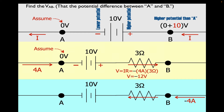That gives me negative 12 volts. To find the potential at B, I take the starting potential plus all the changes: zero plus 10 volts plus negative 12 volts, and that gives me negative 2 volts. A is at zero, B is at negative 2. That means A is actually the higher potential, and B, because it's negative, is the lower potential compared to A.